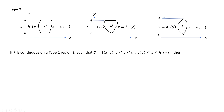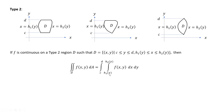Region D is classified as type 2 when it's the set of ordered pairs (x,y) such that y lies between c and d, and x lies between h₁(y) and h₂(y). We must integrate with respect to x first because the x limits are functions of y. Take care of those variable limits first, then plug in the constant limits c and d after integrating with respect to y.